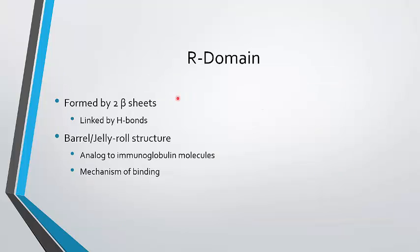The R domain is the first domain we're going to talk about because it's the first involved in interacting with the cell. It's formed by two beta sheets linked by hydrogen bonds, and these beta sheets form a beta barrel, very prominent in nature. This motif is analogous to immunoglobulin molecules, which are very frequently found in cells. Thus, this is the mechanism of binding. Because it's so common, the cell has a receptor that's used to recognize it.